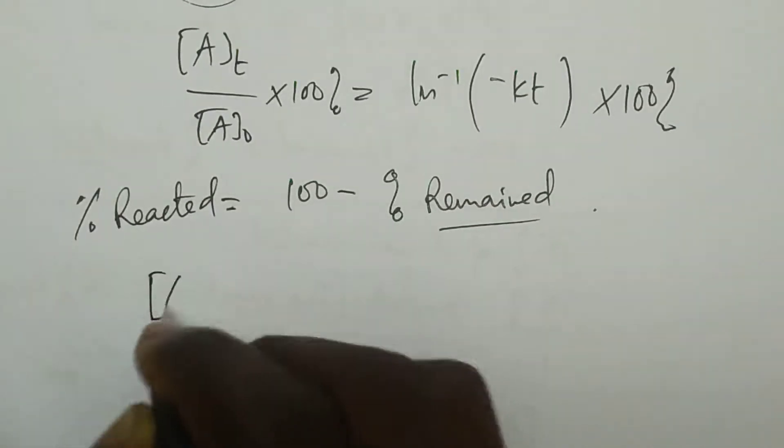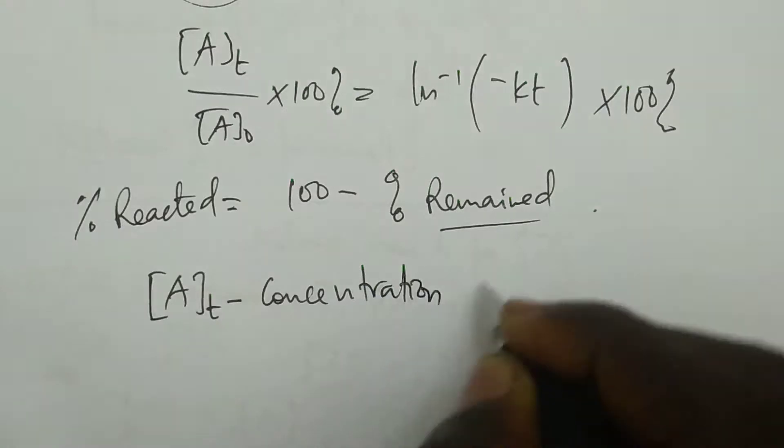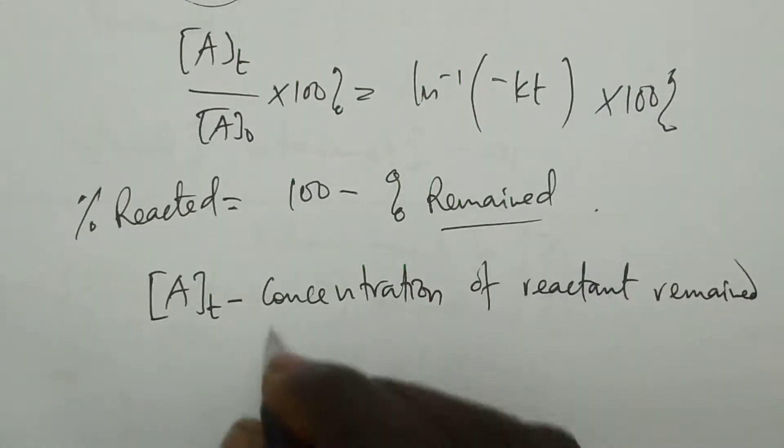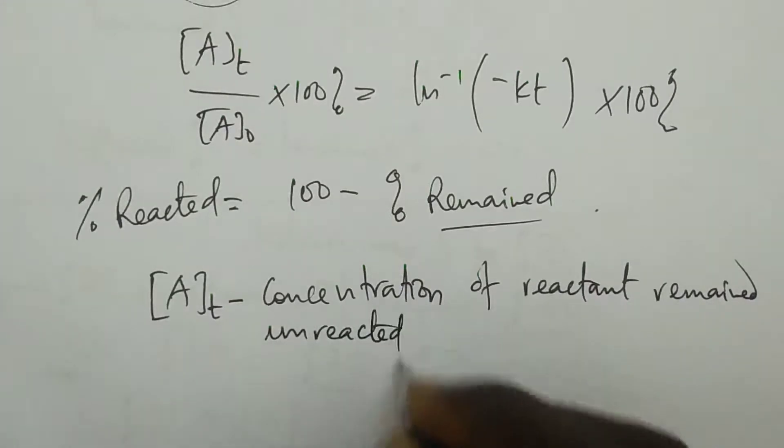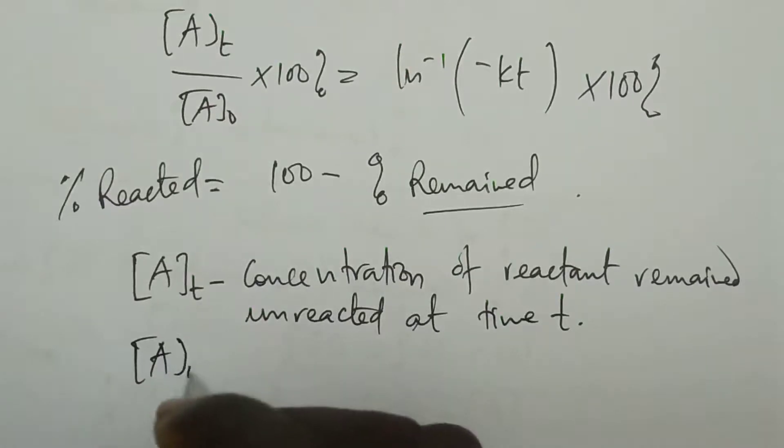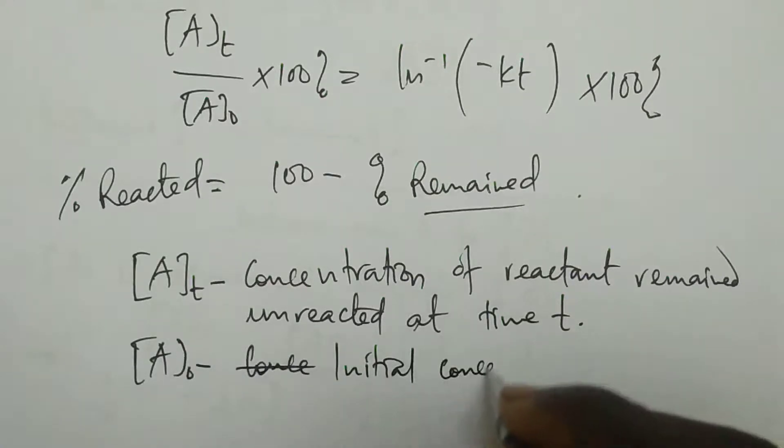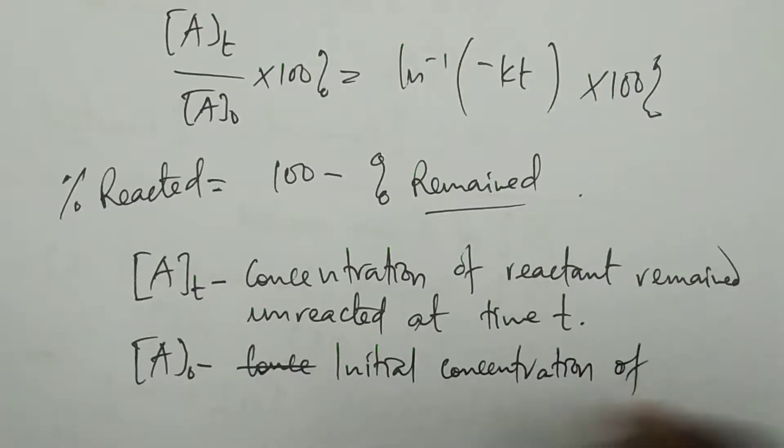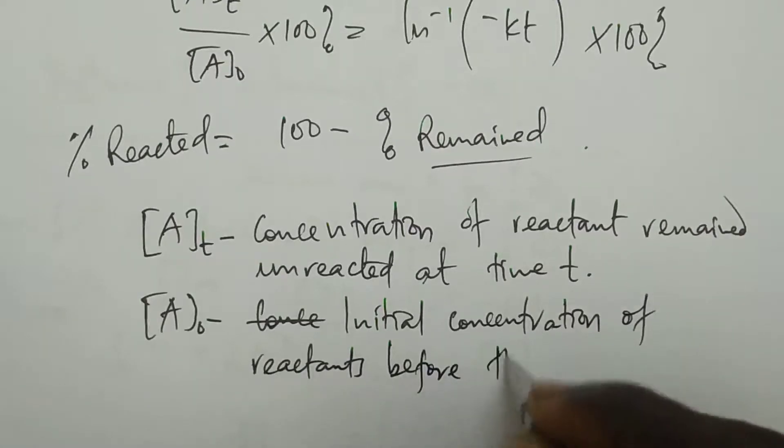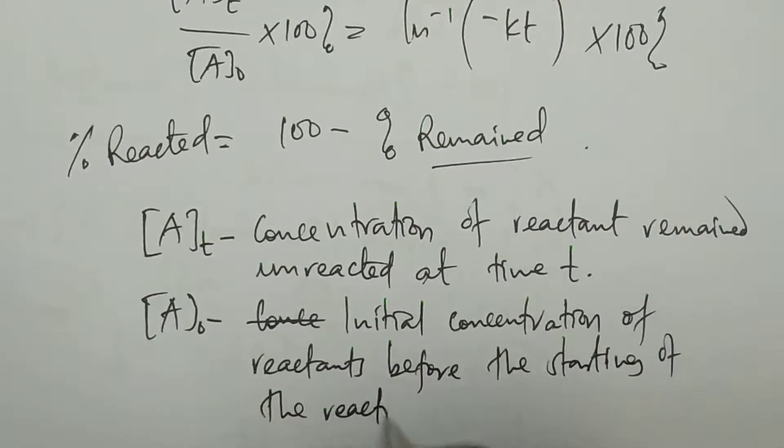One thing you need to note or remember is that concentration AT is the concentration of reactant remaining unreacted at time T, any time of the reaction. While concentration A₀ is the initial concentration of reactants before the start, at the starting of the reaction.